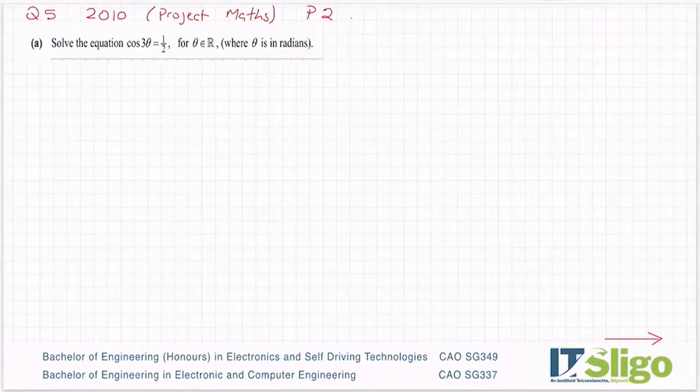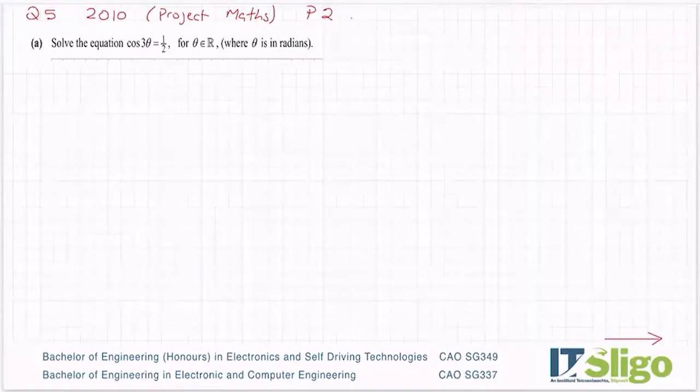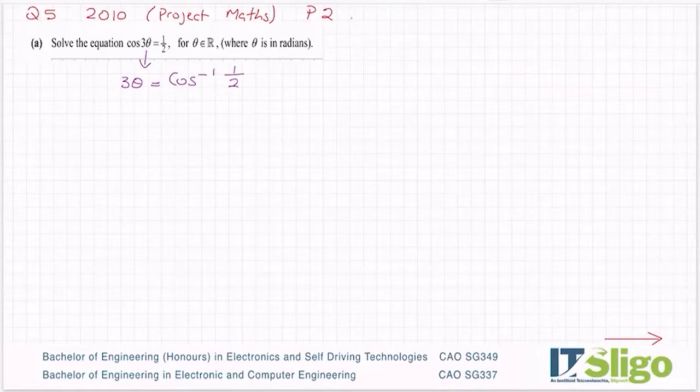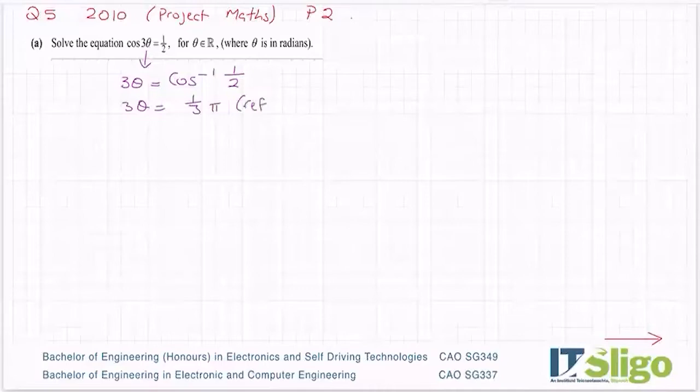So to work out our reference angle: cos(3θ) = 1/2. So 3θ, I'm getting the cos inverse of both sides. Cos inverse of 1/2, when your calculator is in radian mode, will automatically go to π/3. So 3θ = π/3, and that's what we call our reference angle.